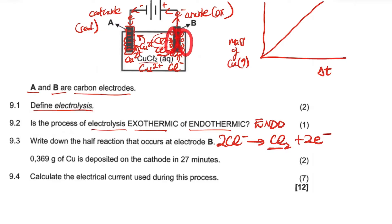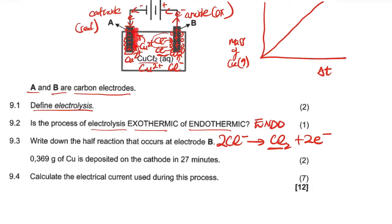We're told 0.369 grams of copper is deposited at the cathode in 27 minutes. We need to convert the time to seconds: 27 × 60 = 1620 seconds. We're also given the mass. For question 9.4, we need to calculate the electrical current.